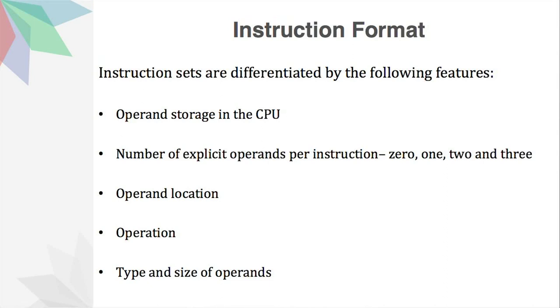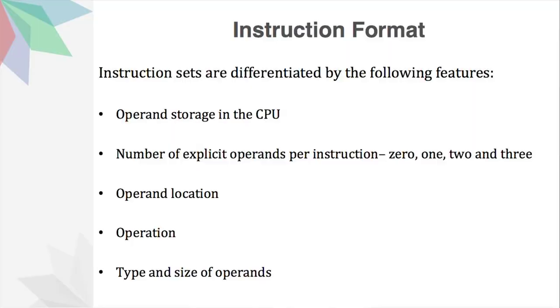Then we have the operation. Here it depends on the type of operation that is performed — whether the operation requires accessing the memory or not. Next, we have the type and size of operands, that is whether the operand is an address, or whether it is a number, or it can be in any other format of data. So these are some of the different types of features.